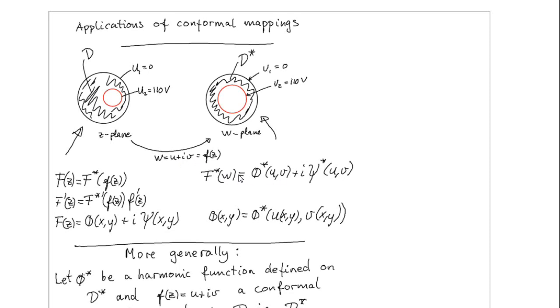If we have a complex potential here, then we are able to find the corresponding complex potential in this set plane by doing as follows. Instead of using this variable W, we just replace this W by what the value W is equal to in terms of set, which is also a function of x and y.